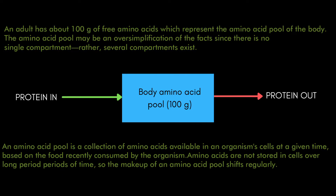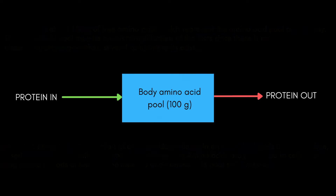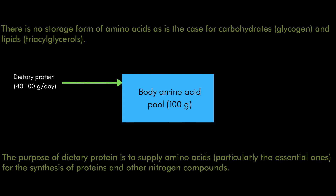The body picks up amino acids from this pool and utilizes them to produce the proteins it requires. The amino acid pool is essentially a collection of all amino acids from which the body draws to synthesize the specific proteins it needs. The first source feeding this pool is dietary protein — whatever protein you eat gets broken down into amino acids and fills up this pool.